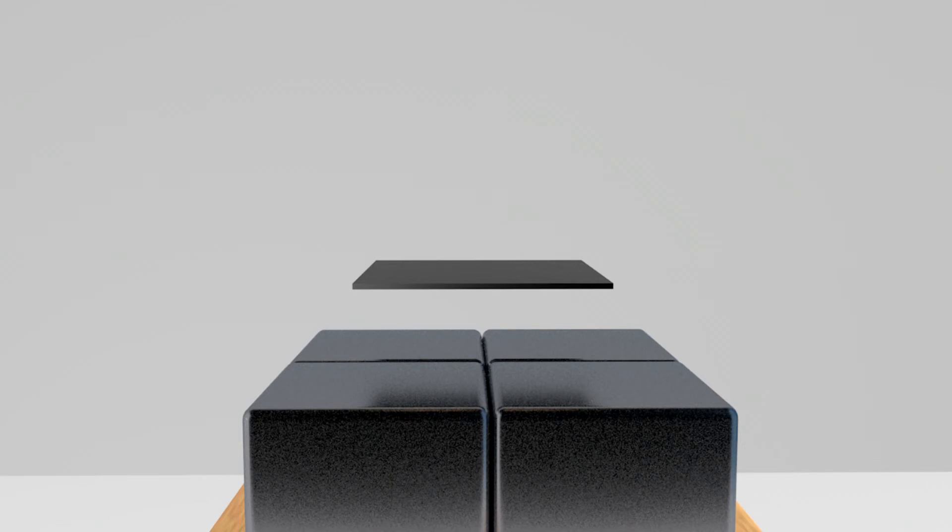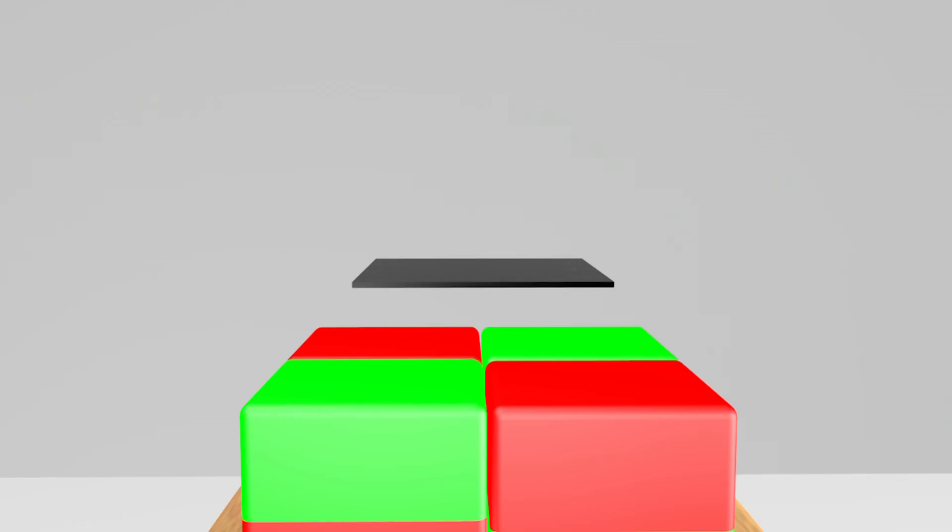If you take a closer look at the neodymium magnets you will see that the following arrangement is present: two of the neodymium magnets point with their north pole and two with their south pole in the direction of the graphite plate.